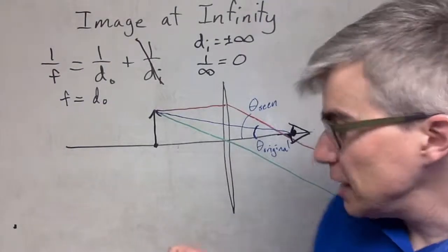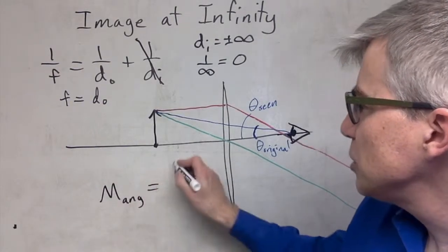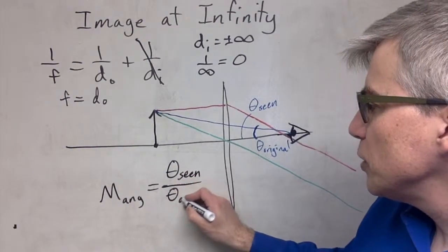The angle that's seen divided by the angle original gives us our new formula for angular magnification. Angular magnification is theta that's seen over the theta original.